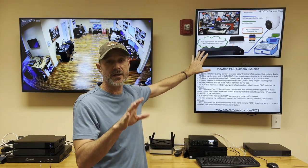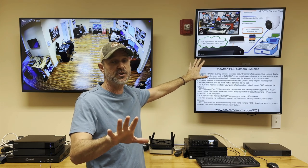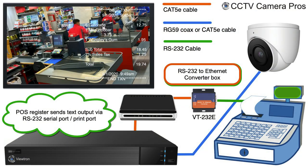Here's how it works. There are a few ways to integrate your point-of-sale cash register with a Viewtron security camera system. The most common way is using our RS-232 to Ethernet converter box. You connect the serial port of your point-of-sale system — the serial port is a printer port. Some point-of-sales have an extra RS-232 connection, or you can split the printer port so the text goes to both the printer and to our POS text capture box. That text capture box is connected to the same network as your Viewtron DVR so the DVR can receive all that point-of-sale text over the network.